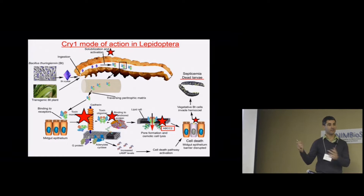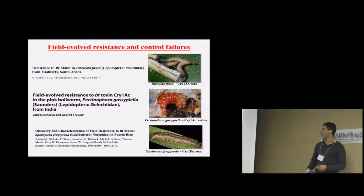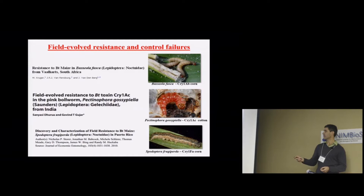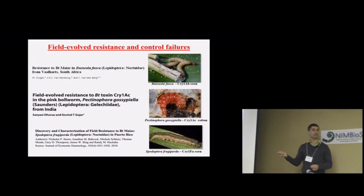But how about resistance in the field? Are these mechanisms translated to field resistance? We now have at least three cases of documented resistance to Bt crops resulting in control failure: Busseola fusca resistance to Cry1Ab corn in South Africa, resistance to Cry1Ac cotton in pink bollworm, and in the US, resistance to Cry1Fa corn in Spodoptera frugiperda, originally described by Nick Storer.